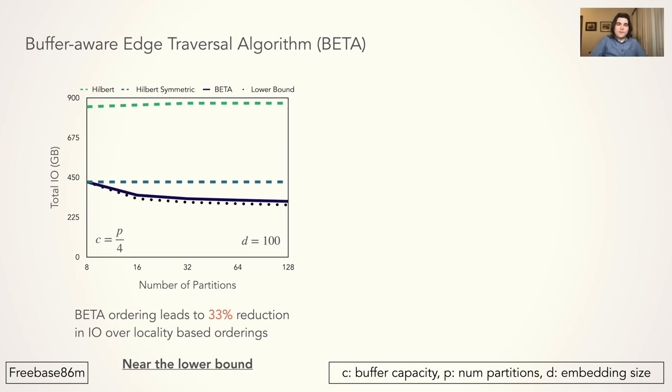The y-axis is the total amount of I/O performed in terms of gigabytes. From this, we can see that the Hilbert curve results in the most I/O, with Hilbert symmetric having the next most. We see that the BETA ordering results in about 33% less I/O than the best Hilbert curve approach. As we increase the number of partitions, the BETA ordering tracks closely with the lower bound.